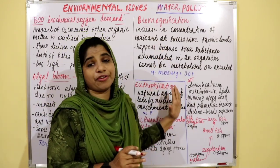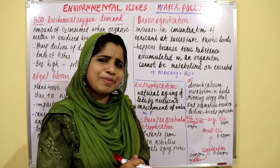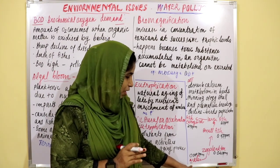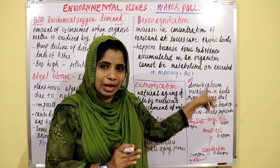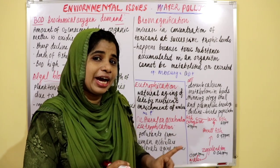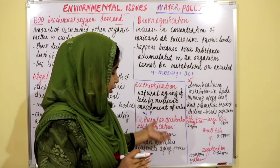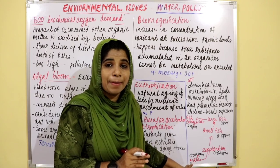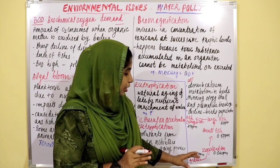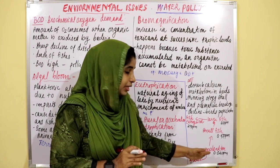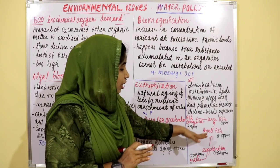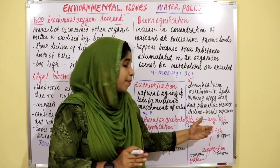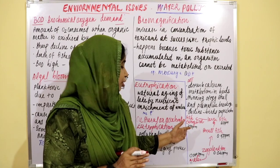This is the effect of biomagnification. In the textbook diagram: water has 0.003 ppm, zooplankton has 0.004 ppm, small fish has 0.005 ppm, large fish has 2.00 ppm, and fish-eating birds have 25.00 ppm.